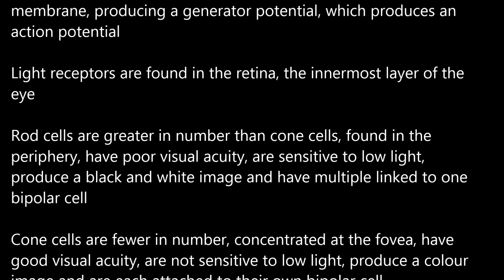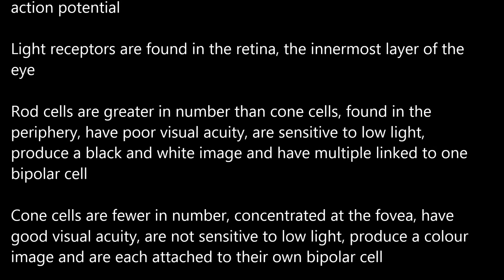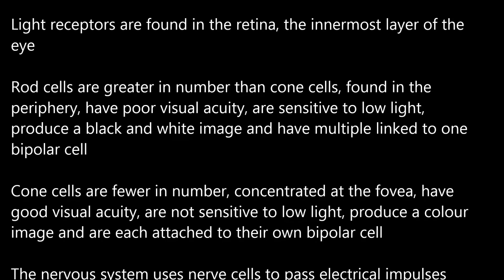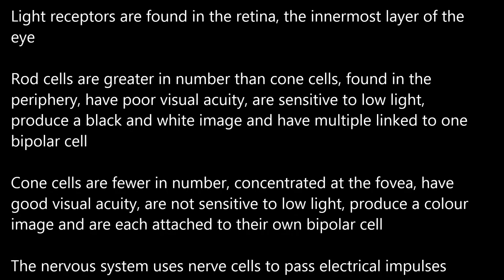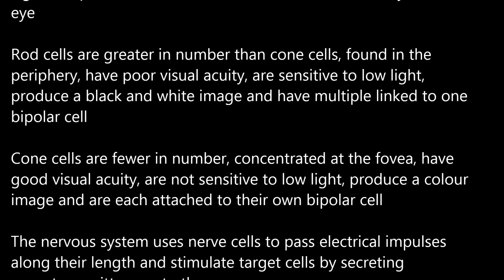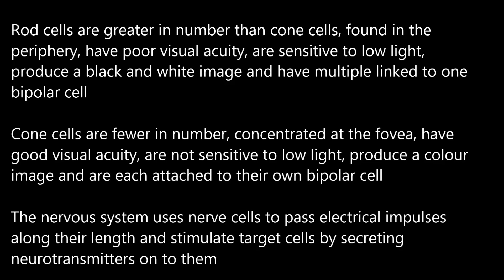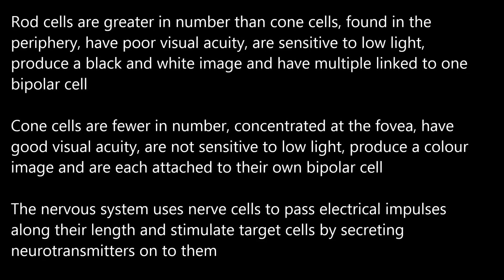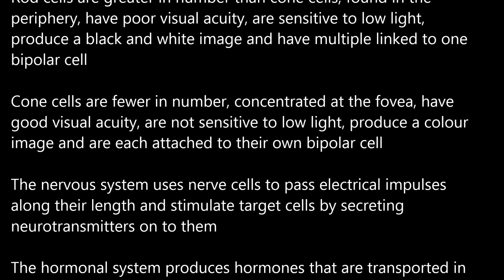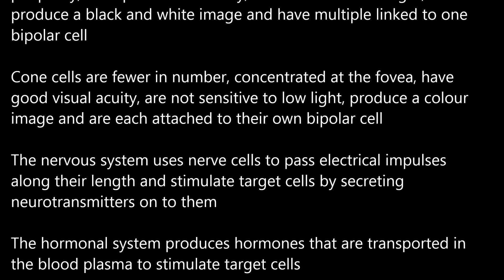Cone cells are fewer in number, concentrated at the fovea, have good visual acuity, are not sensitive to low light, produce a colour image, and are each attached to their own bipolar cell. The nervous system uses nerve cells to pass electrical impulses along their length and stimulate target cells by secreting neurotransmitters onto them.